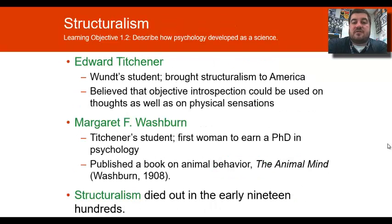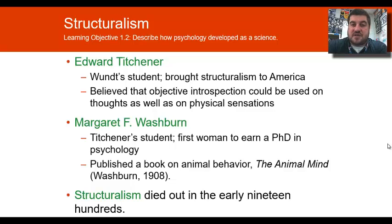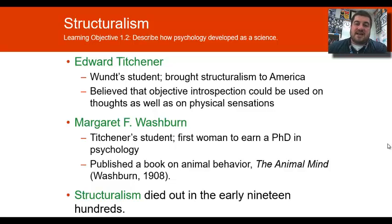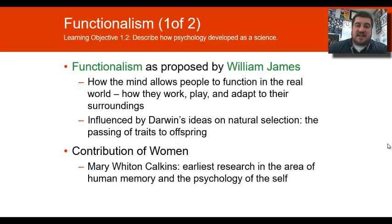Edward Titchener was Wundt's student — he's the one who brought psychology and structuralism to America. Margaret Washburn is the first woman to earn a PhD in psychology. These are notable landmarks in time. Structuralism ends up dying out in the early 1900s because we found better ways to study psychology.